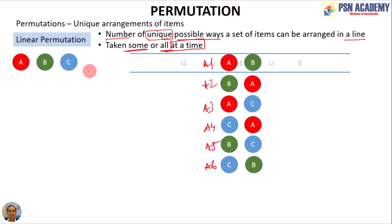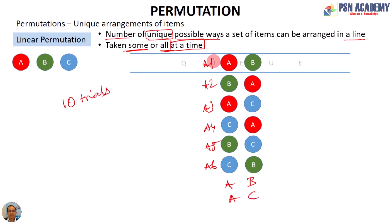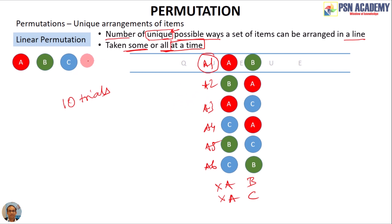When you pull two coins from three coins, we call each selection a trial. In 10 trials you may get AB again or AC again, but AB has already been labeled A1, so that second AB is not unique. Repeated arrangements are not counted. So out of 10 trials, uniquely you have only six pairs — six permutations when taking two coins at a time from three coins.